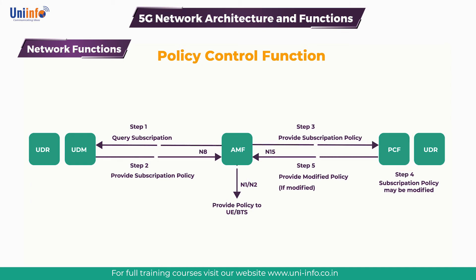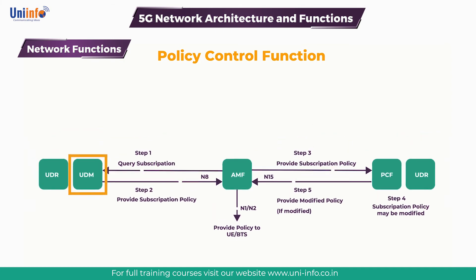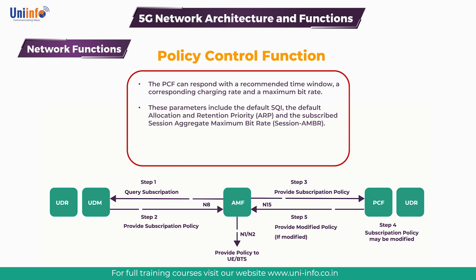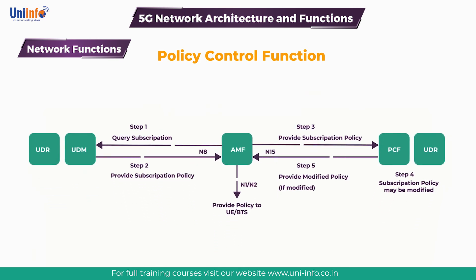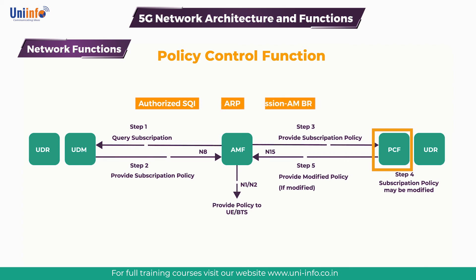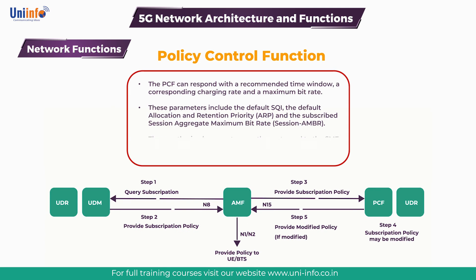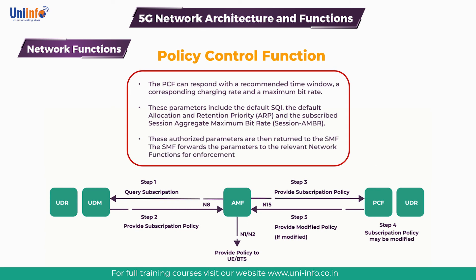The SMF retrieves QoS parameters from the unified data management network function. These parameters include the default 5QI, the default allocation and retention priority, and the subscribed session aggregate maximum bit rate. The SMF subsequently provides this information to the PCF. The PCF applies its policy making decisions to generate the authorized 5QI, ARP, and session AMBR. These authorized parameters are then returned to the SMF.